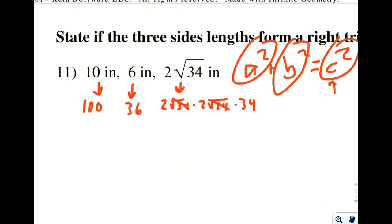So now I have 2 times 2 times 34, or 4 times 34, which is going to be 136. So now that I have squared all of these, which one is the biggest? Well, the 136 is the biggest. So this side is the largest side. I now can plug it into my a squared plus b squared equals c squared.